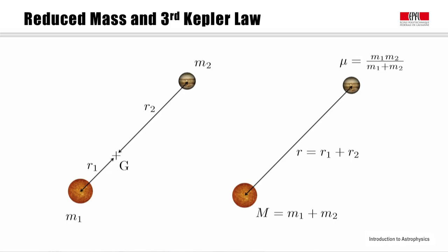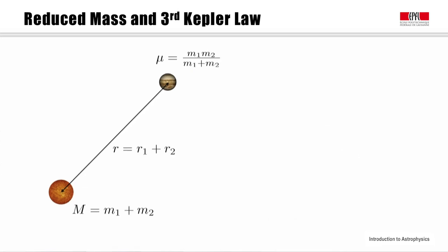We have thus reduced the problem of the motion of two bodies around a common center of gravity to the motion of a body with virtual mass mu around another virtual body, which has a mass equal to the sum of the masses of the two bodies in a planetary system. The distance between these two virtual bodies is the same as here, r1 plus r2.